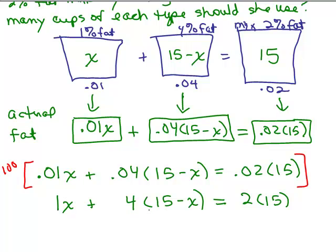And I'm going to have to do my distributive property here, the 4 times 15 minus x. So I have 1x. Again, no need to write the 1 in front of it. And I'm going to distribute that 4. So 4 times 15 is 60, 4 times x is 4x and I have a minus sign. So it's minus 4x equals 2 times 15 is 30.